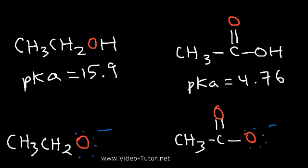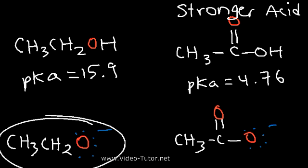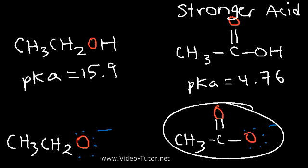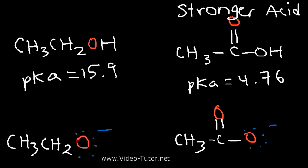Now, we said that acetic acid is the stronger acid. With this information in mind, which one is the stronger conjugate base? Is it the ethoxide ion, or the acetate ion? It turns out that ethoxide is a stronger base.